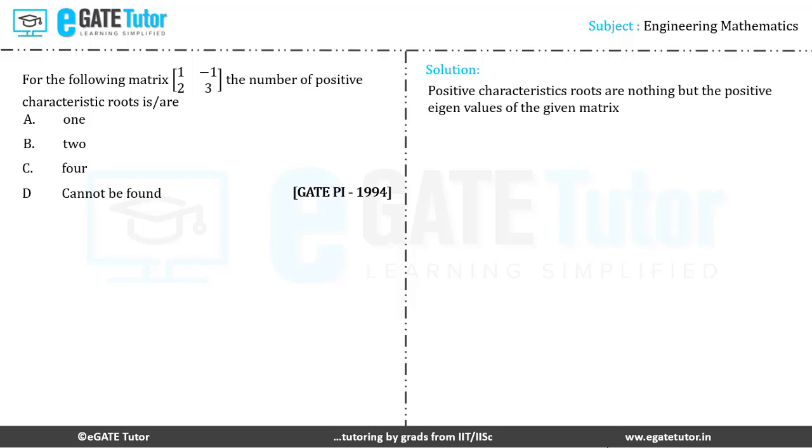Positive characteristic roots are nothing but the positive eigenvalues of the given matrix. Let us consider the given matrix [1, -1; 2, 3].